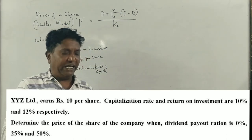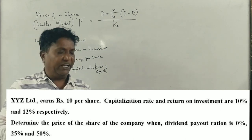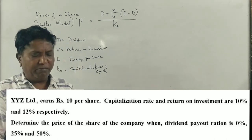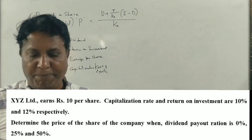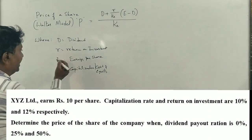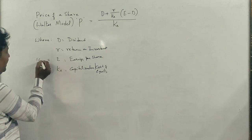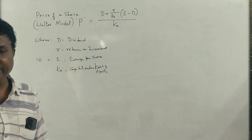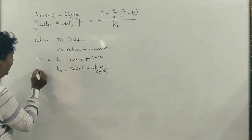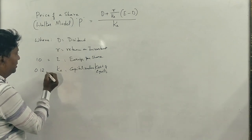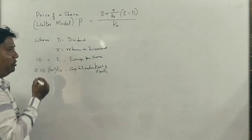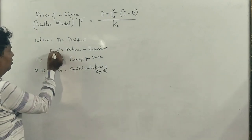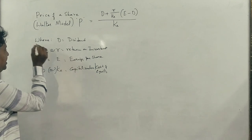We will solve this problem. XYZ Limited earns 10 rupees per share. The capitalization rate is 10%, which is 0.10, and the return on investment is 12%, which is 0.12. We need to determine the price of the share when the payout ratio is 0%, 25%, and 50%.